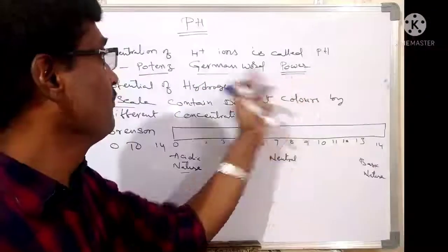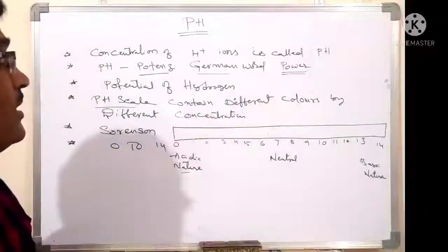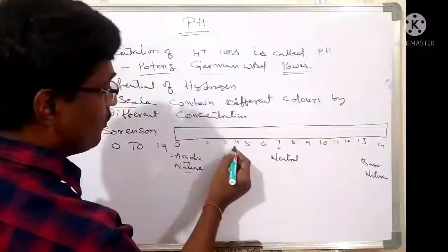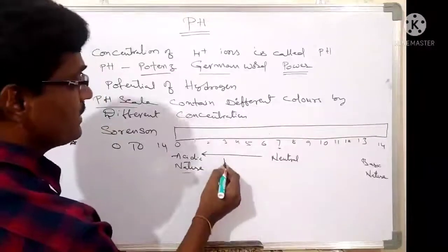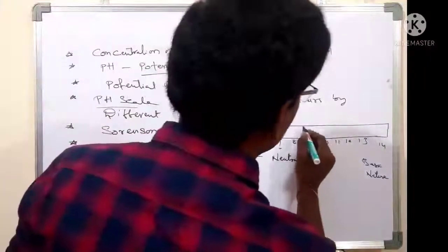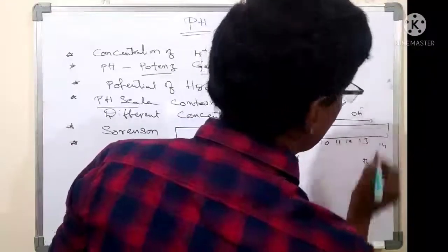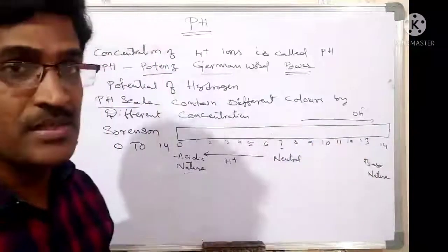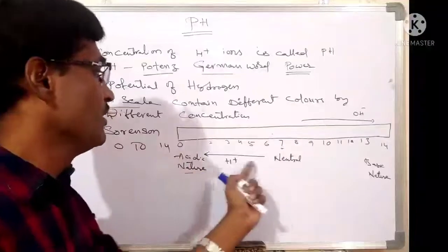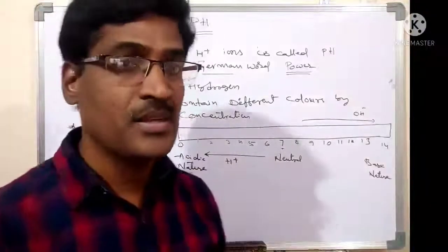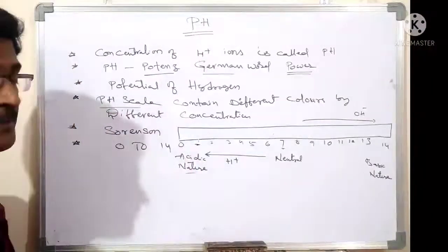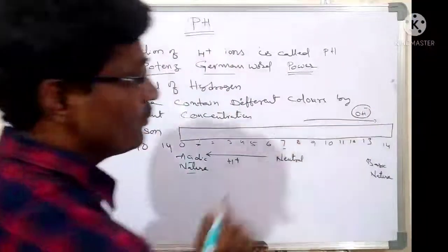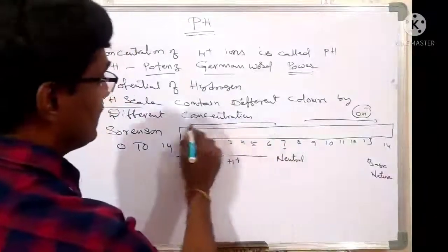The word potence is a German word meaning power, giving the concentration of H plus ions. Exactly 7 is neutral. Going from 7 down to 1 or 0, acidity increases and H plus ions concentration is more. Going from 8 to 14, OH minus ions concentration increases, meaning basicity increases and acidity decreases. Value 0 is the strongest acid; value 14 is the strongest base.